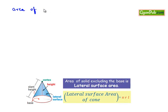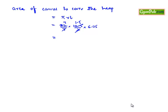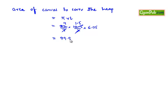Here we need to find the area of canvas required to cover the heap, which is the curved surface area of the cone, that is πrl, that is 22/7 × 10.5/2 × slant height that is 6.05, which is equal to... here 7 goes into 10.5, 1.5 times and 2 goes into 22, 11 times. Finally we get 11 × 1.5 × 6.05 is 99.825 centimeters square.